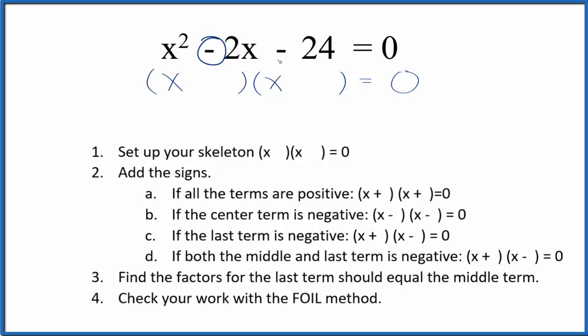So we have a negative on the middle term and a negative on the last term. If the middle and the last term are both negative, we'll have a positive and a negative. So that's what we'll put right here in our skeleton equation, a positive and a negative.